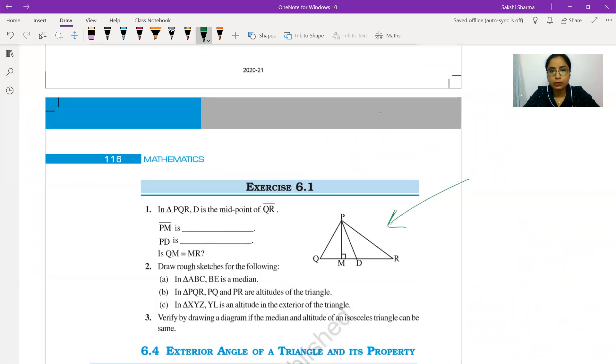Can you tell me - no Sahaj, it's not correct that every median is altitude. I think your question will be answered here. Look at this triangle - in triangle PQR, D is the midpoint. If there is a line segment which joins this midpoint to the opposite vertex, that is called median. The one that joins the midpoint is median; the one that makes a 90-degree angle is altitude. Now tell me, which one is the median and which one is the altitude?